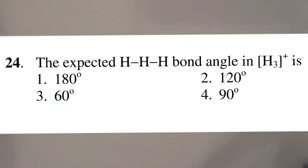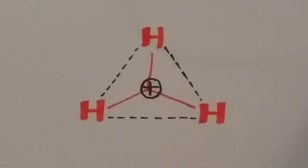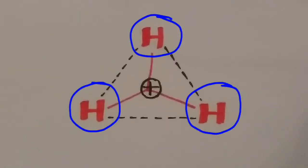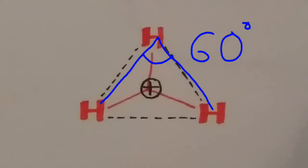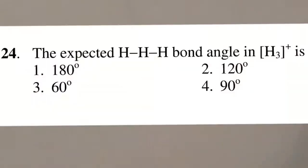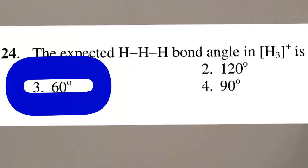First question: the expected bond angle in H3+ ion. This is the structure for H3+ ion, where each hydrogen is at the vertex of an equilateral triangle. Therefore, the bond angle becomes 60 degrees. Option C is the right choice.